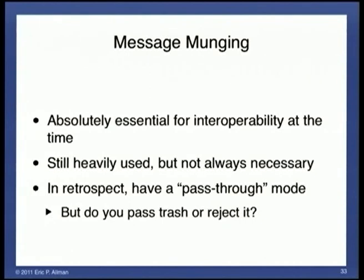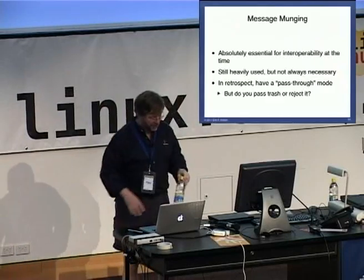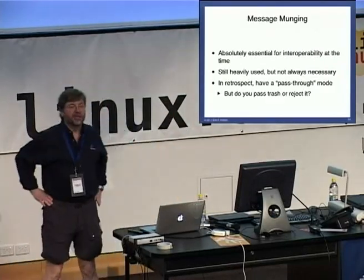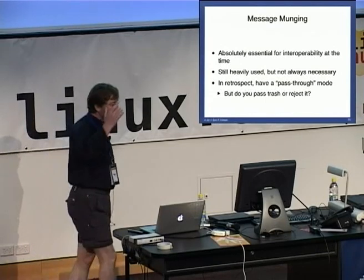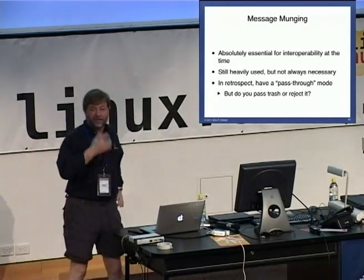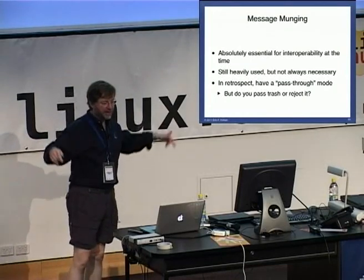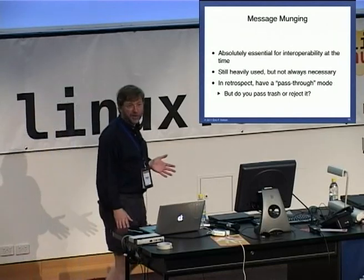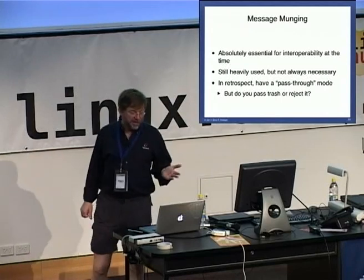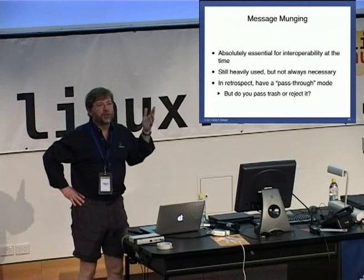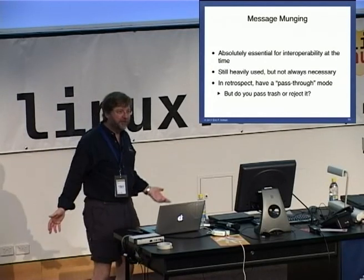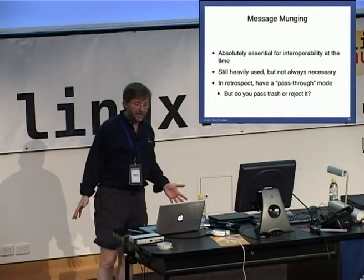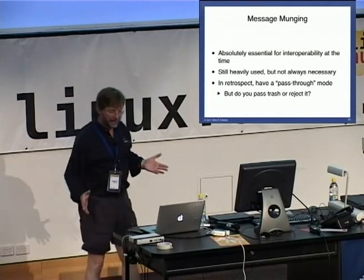Message munging — i.e., changing headers on the fly — was absolutely essential for interoperability at the time. You could not get around it. It is still heavily used, in fact. There are cases where you don't need to do header munging anymore — if you're taking from an internet site to another internet site and you're not trying to do anything fancy, you're not at a corporate gateway, you don't have to do it. So there should probably be a pass-through mode — I would do that today. But then there's the question: when you get a message that is wrong when it comes in, do you just pass it through wrong, or do you reject it, or do you fix it? SendMail fixes it today. And there is no obvious correct answer to this — there probably is no correct answer. It's just a design decision.